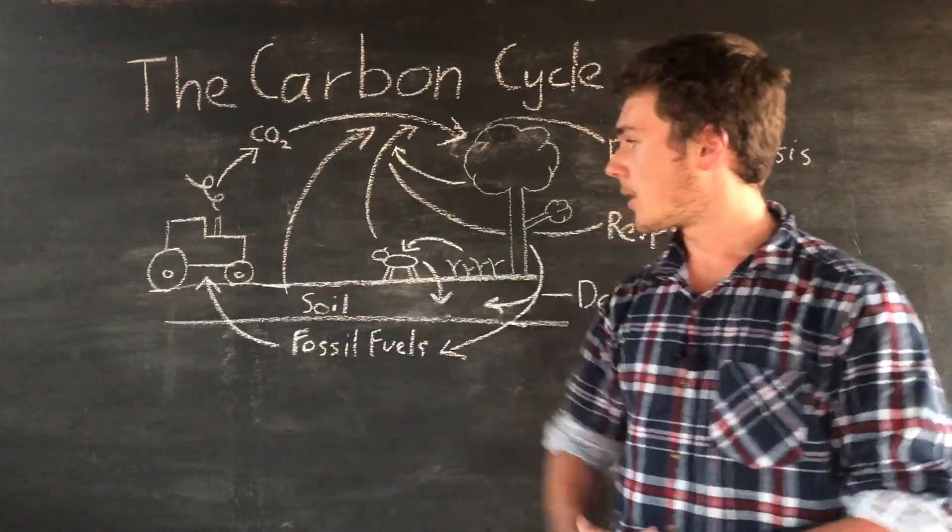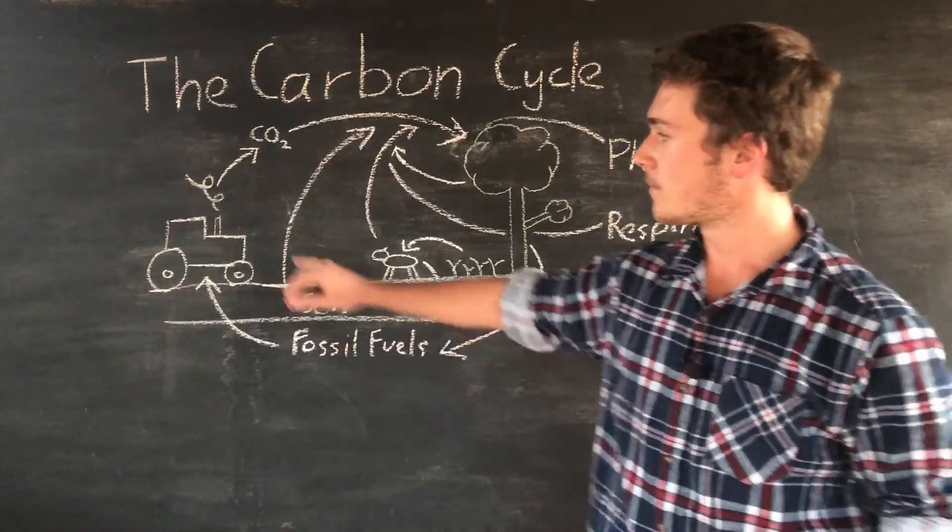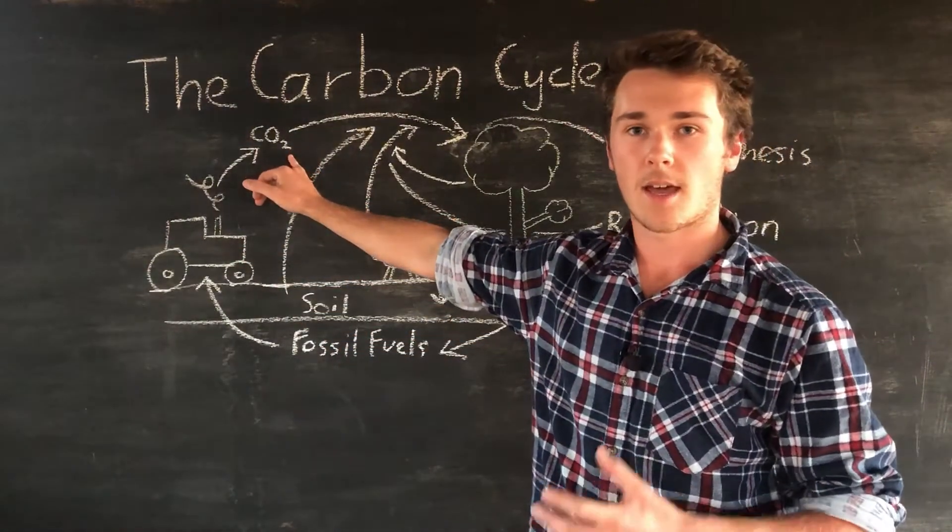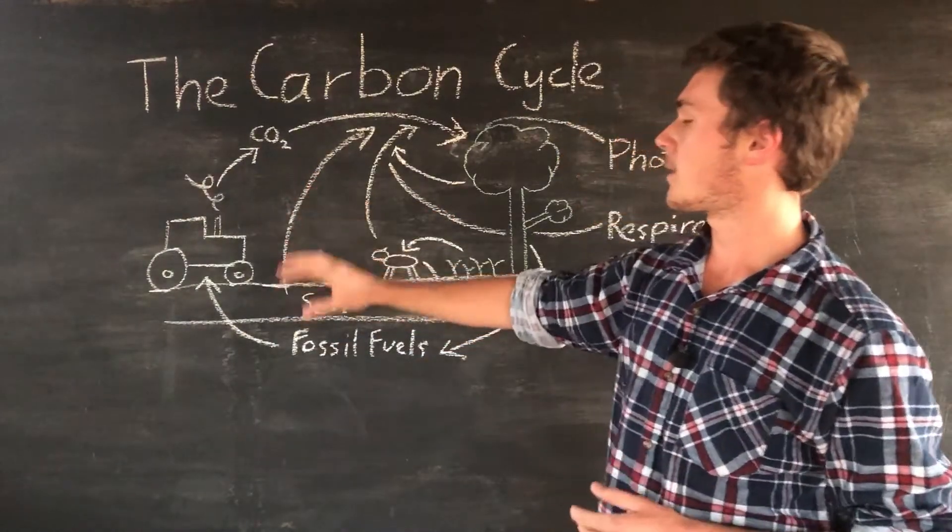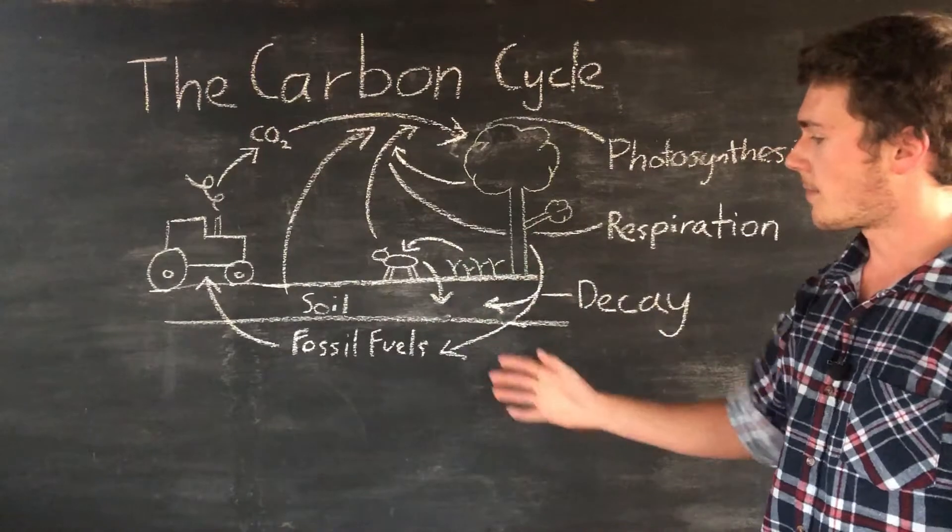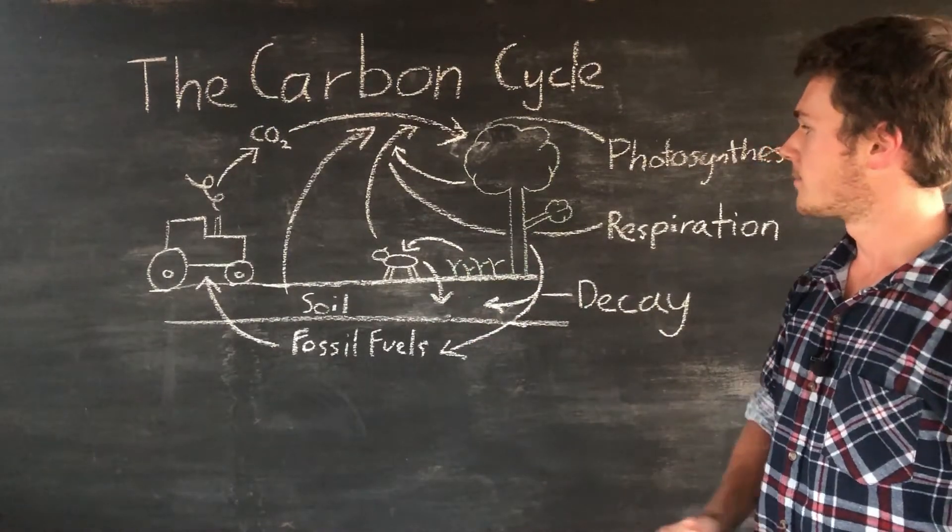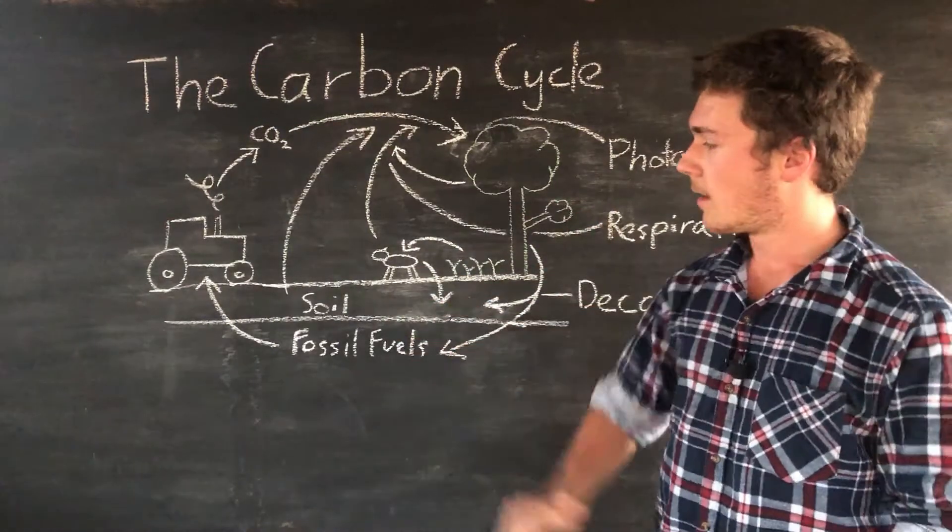As you can see here we've got our tractor, it's burning our fossil fuels and that's going to release our carbon as carbon dioxide. You can see it all goes back to the atmosphere and then drawn up by plants and then from plants you can move around.